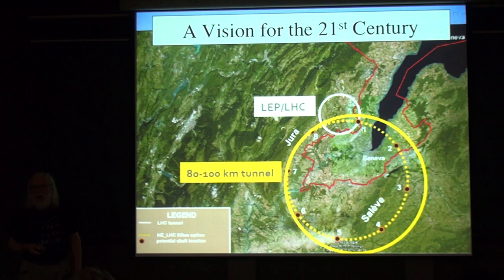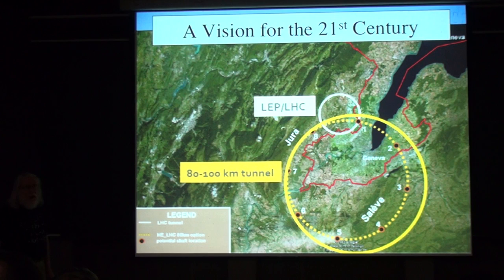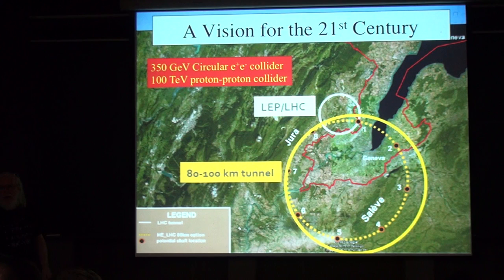It could be that the supersymmetric particles are even heavier, and eventually we would want to build a higher-energy accelerator. Even if the supersymmetric particles are light, a higher energy accelerator lets you produce more of them and study more properties. One of the things we're starting to think about at CERN is the possibility of making a very large tunnel — 80 to 100 kilometers in circumference — going around the city of Geneva, in which you could do high-energy electron-positron collisions or very high energy proton-proton collisions.